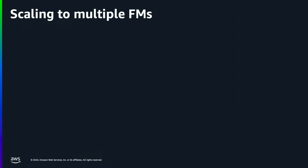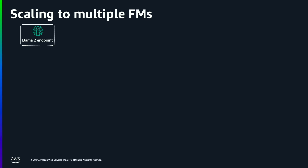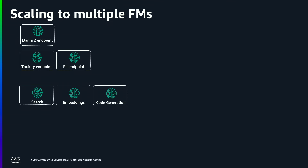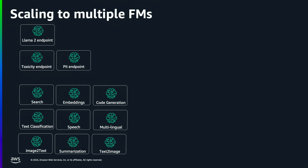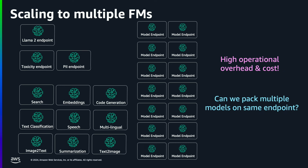You have deployed a Llama 2 model on SageMaker using an inference endpoint successfully in production. Now you want to put guardrails to protect data privacy and moderate content by having toxicity and PII models hosted in their own endpoints. You also need embedding and search models so your application responds with facts. This can easily lead to multiple or even hundreds of endpoints, which you can't scale — it comes with operational burden and is a costly affair.